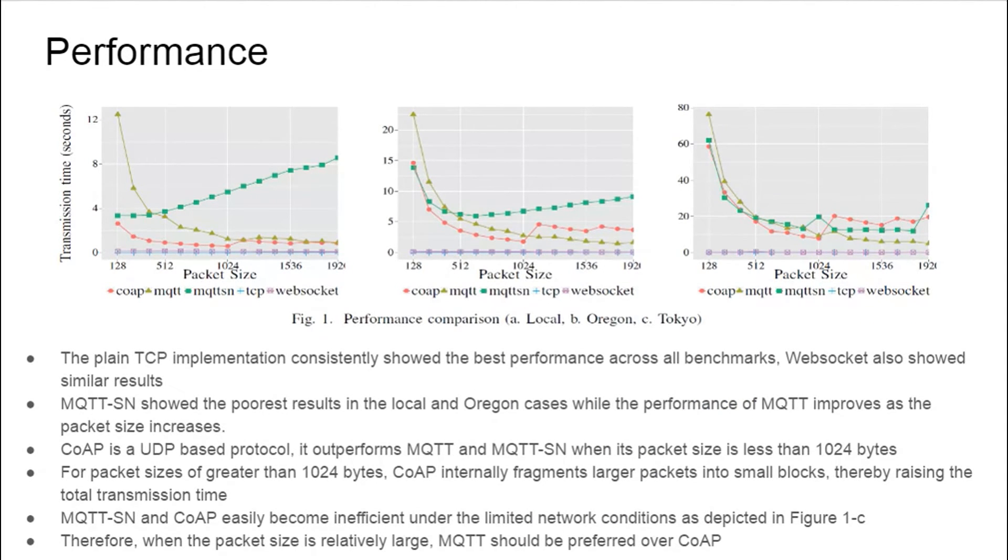Looking at the performance metric, we can conclude that TCP and WebSocket protocols show the best performance across all benchmarks. MQTT-SN shows the poorest result in the local and Oregon cases, while MQTT's performance increases with increasing packet size. CoAP performs better than MQTT and MQTT-SN as long as its package size is less than 1024 bytes. For larger package sizes, transmission time increases for CoAP as can be seen from the graphs. This is due to the fragmentation of larger packets into smaller blocks. MQTT-SN and CoAP are not suited under limited network conditions. We can conclude that for larger package sizes, MQTT is preferable over CoAP.